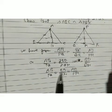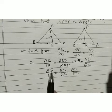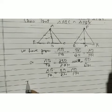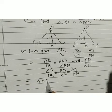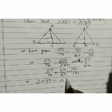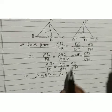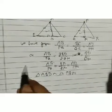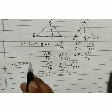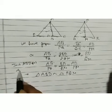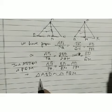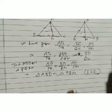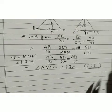Since all three corresponding sides are proportional, we can use the SSS (Side-Side-Side) similarity criterion. Therefore triangle ABD is similar to triangle PQM by SSS similarity.